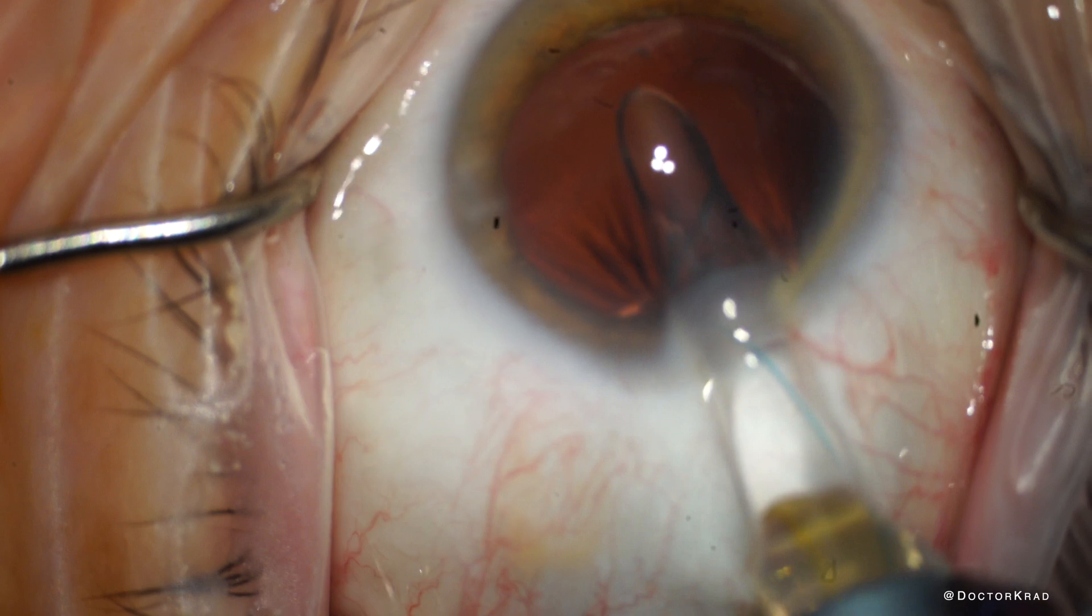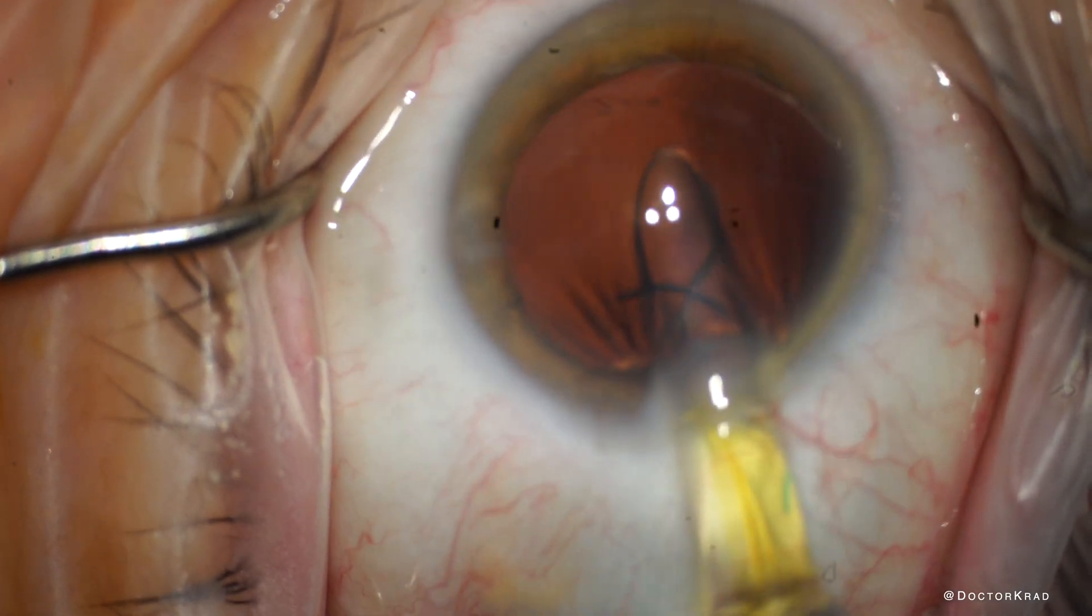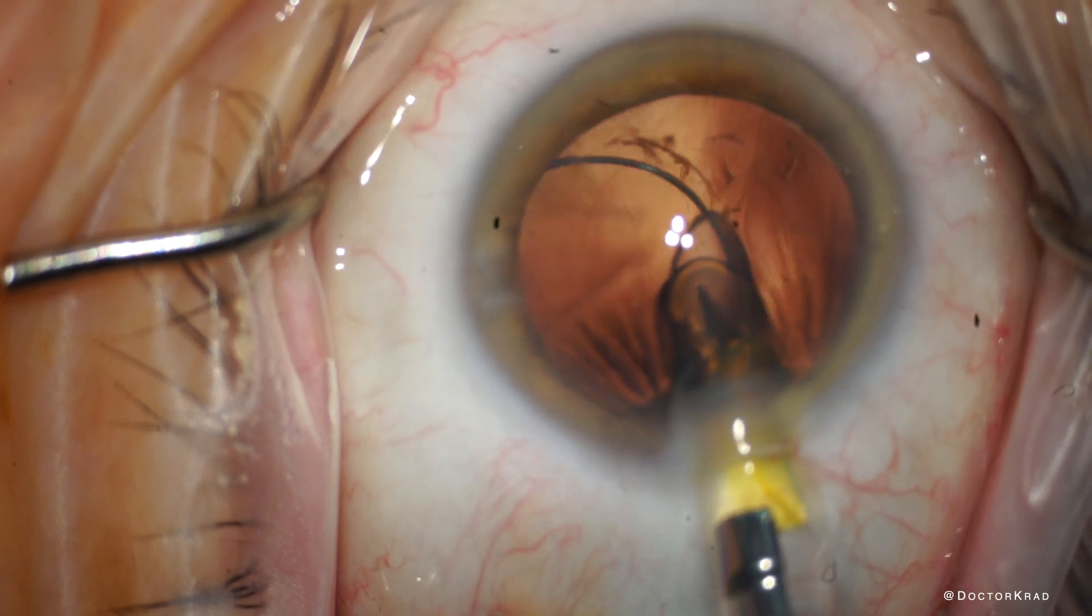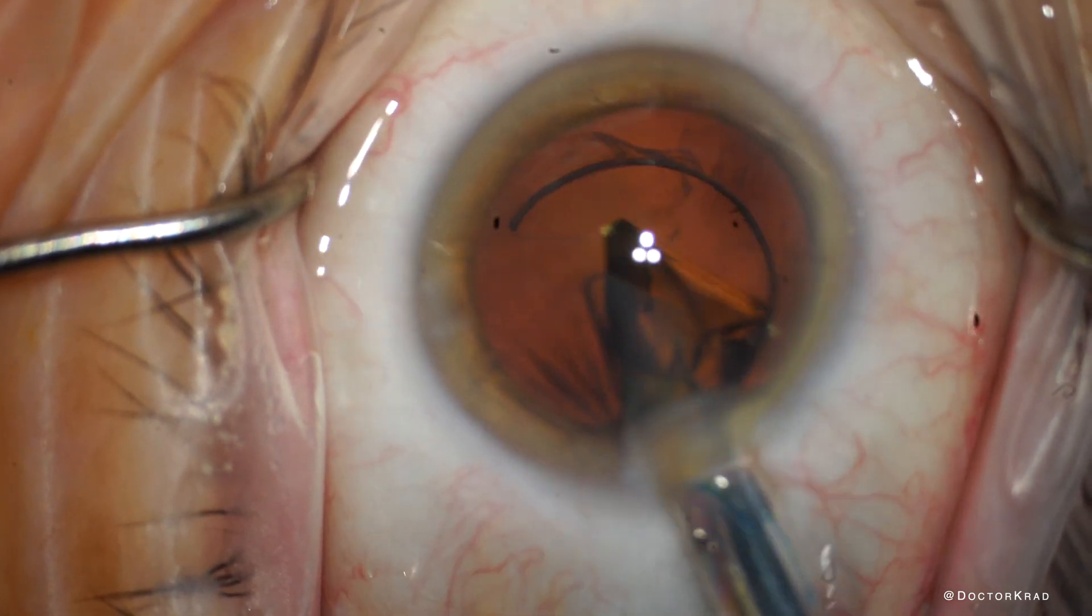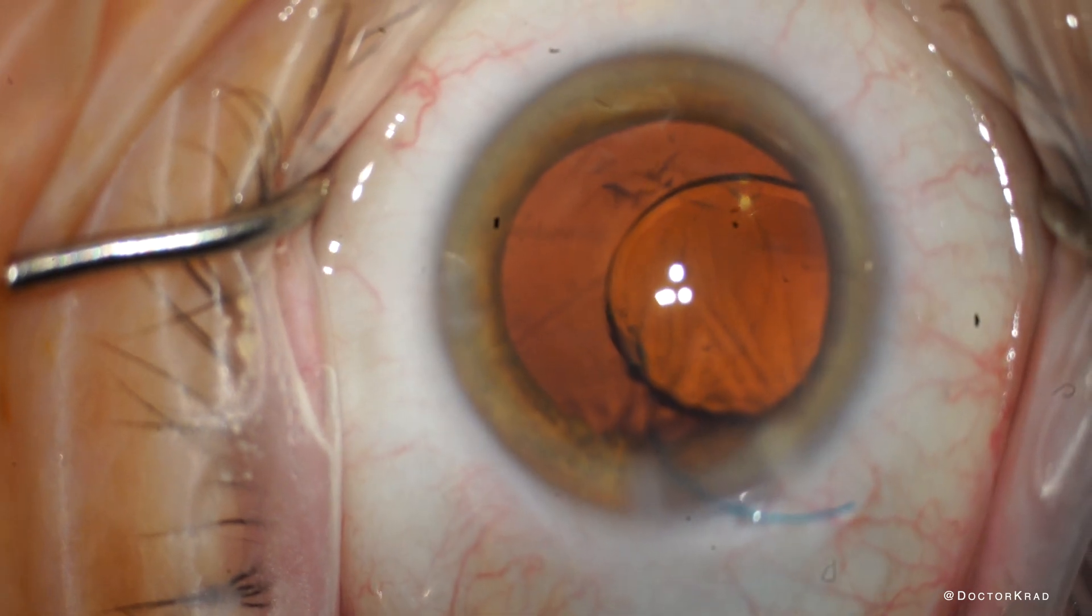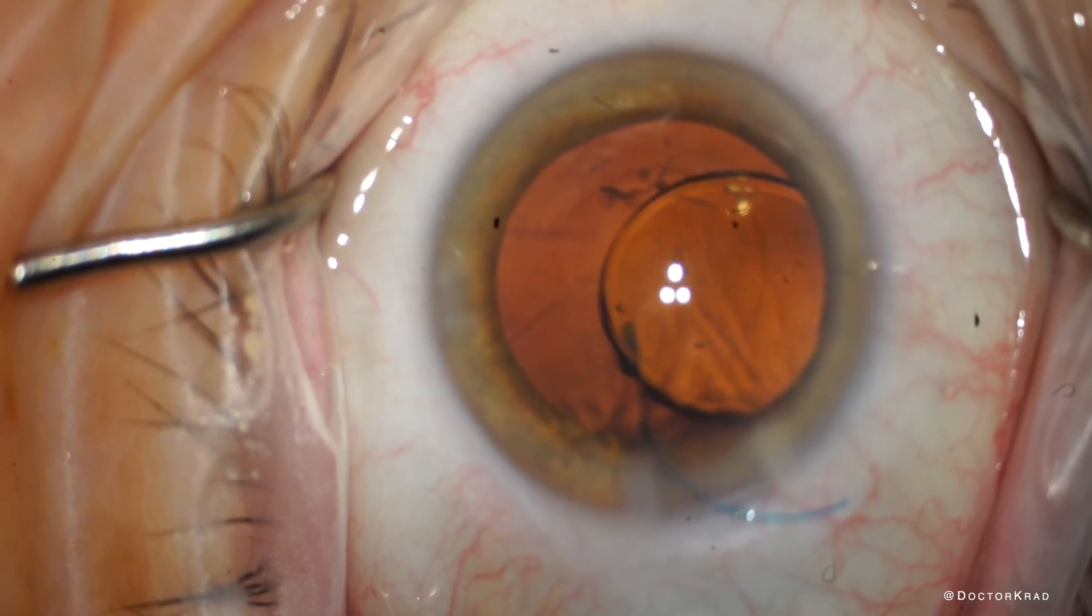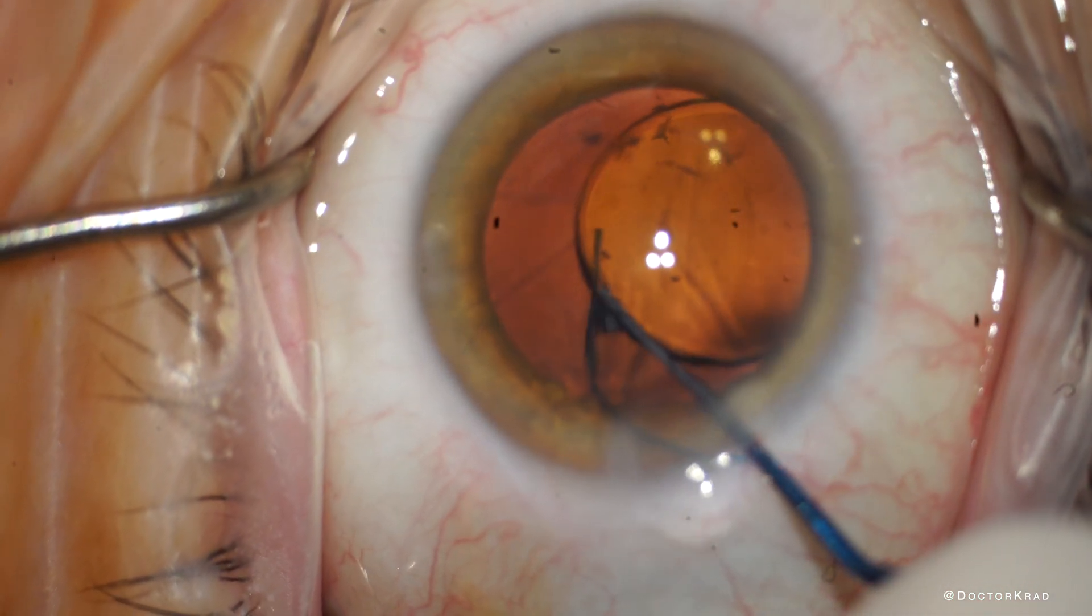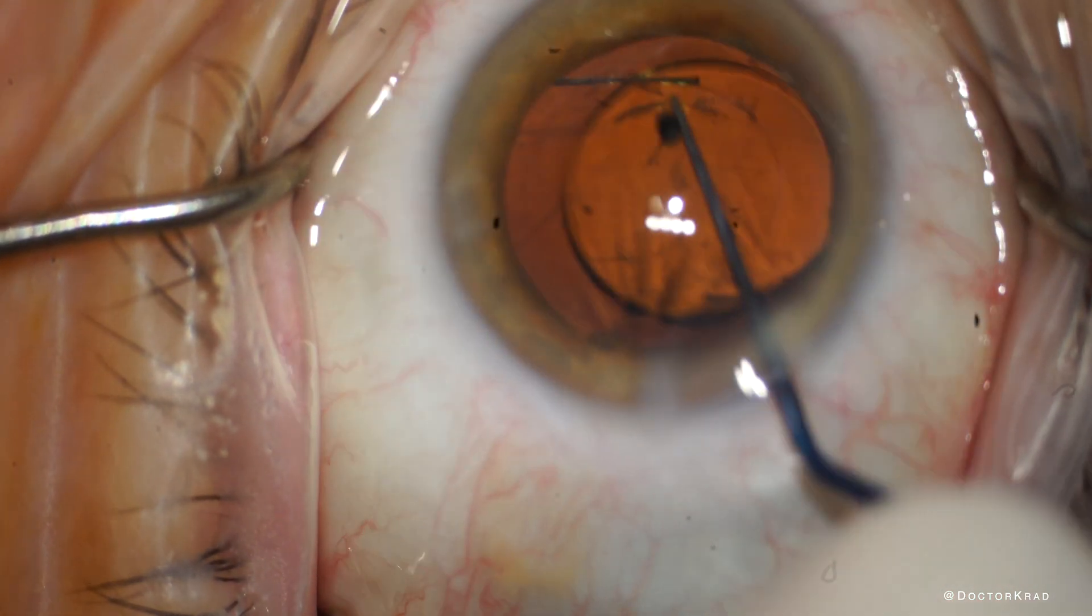And as you advance, rotate the injector clockwise so that the haptic comes out planar. And then you're going to rotate counterclockwise about 180 degrees to deliver the lens. I then remove the injector. I like using a kuglin to dial the lens into the bag. I put the kuglin at the lens haptic junction and we just rotate it in.